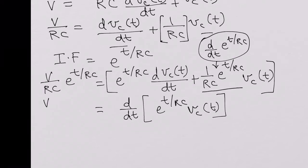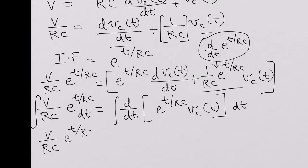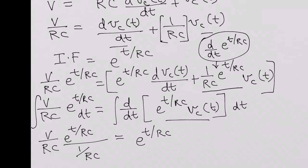So we have V/(RC) · e^(T/RC) = d/dt [e^(T/RC) · V_C(T)]. We integrate both sides from 0 to T with respect to dt. The left side integrates to V · e^(T/RC), and the right side becomes e^(T/RC) · V_C(T) plus an integration constant K.